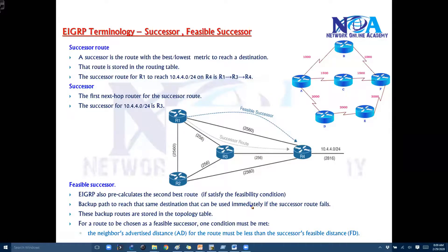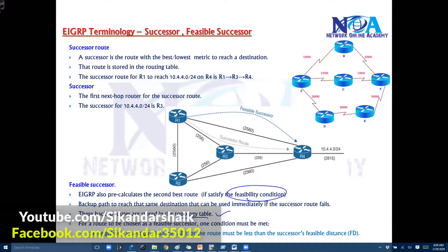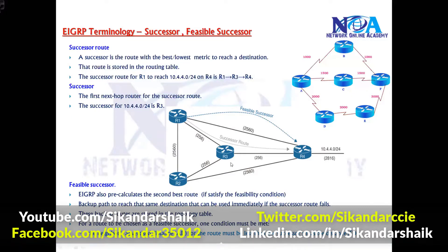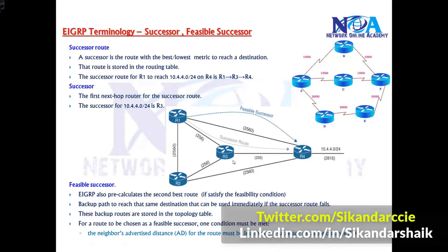The feasible successor route is stored in the topology table. There is a condition: the reported distance must be less than the successor's feasible distance. In order to understand that condition, we need to understand those parameters, which is what we'll be covering in our next topic.